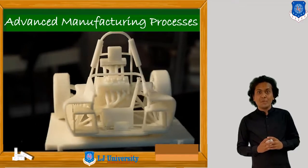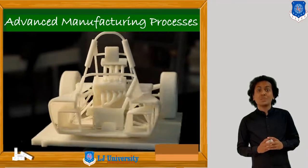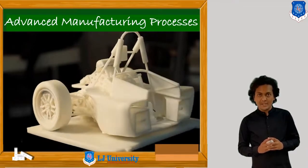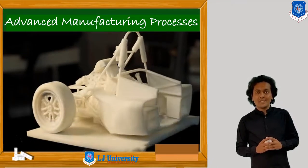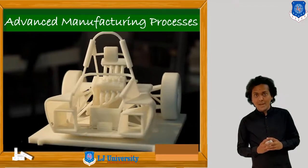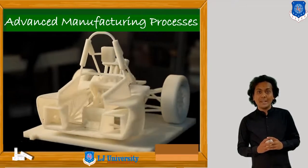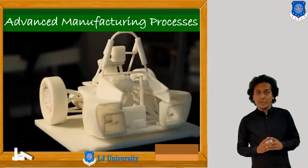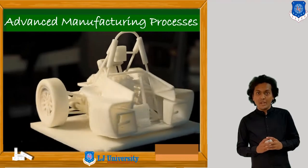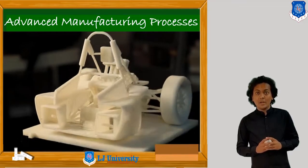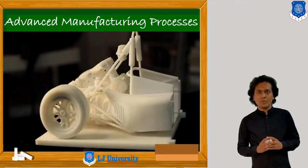In the previous session, we started our discussion on thermal energy based processes and discussed electron beam machining, which is based on thermal energy. Here, material can be removed by melting and vaporization. When we apply electricity, heat is generated and due to this heat, our material will be melted and removed from the workpiece.